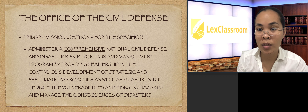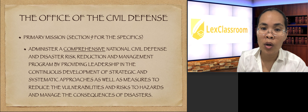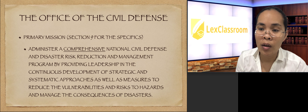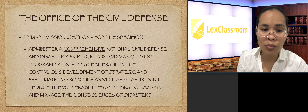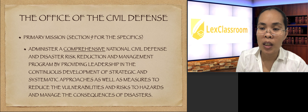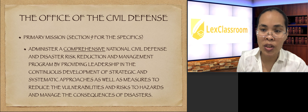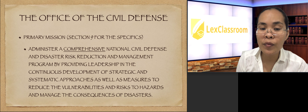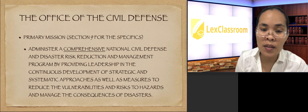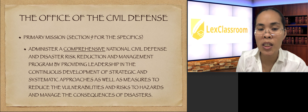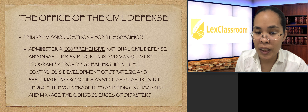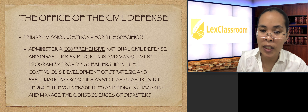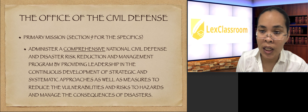Going back, since the last lesson mentioned about the OCD or the Office of Civil Defense, we will include its primary mission as provided in the law. It says: to administer a comprehensive national civil defense and disaster risk reduction and management program by providing leadership in the continuous development of strategic and systematic approaches, as well as measures to reduce the vulnerabilities and risk to hazards and manage the consequences of disasters. This is a very important mission of the said government agency.